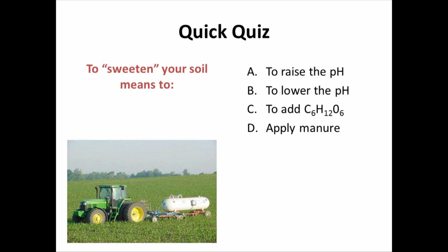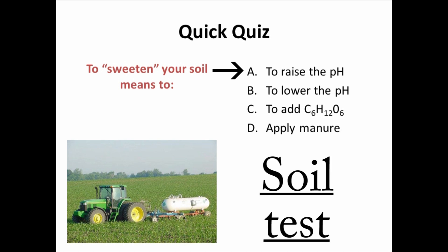To sweeten your soil means to raise the pH — that's what that term means. Agriculture is a naturally acidifying process, so farmers got in the habit of, after so many crop cycles, sweetening their soil by putting down lime. Unfortunately, that practice has seeped into the general consciousness of how we grow plants in gardens, and it's basically not true. You should always be adjusting your soil based on a soil test, not because it's always good to sweeten your soil every other year. Get that soil test, understand your pH, and manage your pH based on those results.